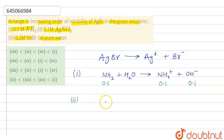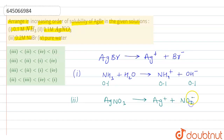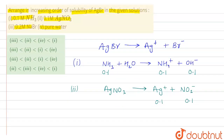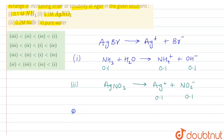In the second option we have 0.1 molar AgNO₃. AgNO₃ will dissociate into its ion form giving Ag⁺ along with NO₃⁻ ions. The concentration of Ag⁺ ions will be 0.1 and NO₃⁻ will also be 0.1.